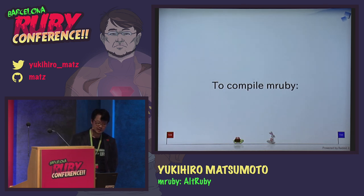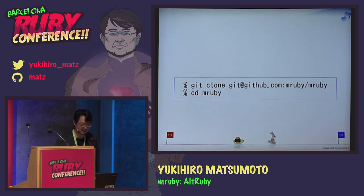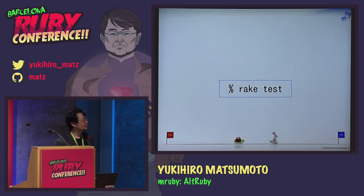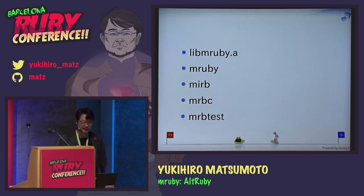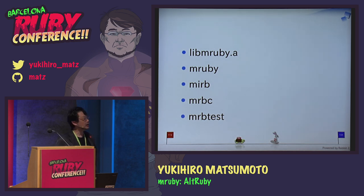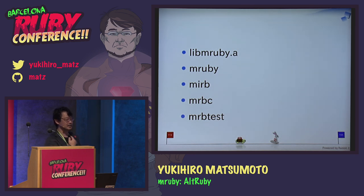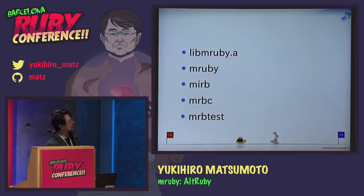You can grab the MRuby source code from GitHub. To compile it, git clone the repo, optionally edit the build config file, then run rake. By compiling via rake you get a static library, the mruby interpreter, mirb (the interactive MRuby, like IRB), mrbc (the bytecode compiler to compile Ruby into binary), and mrb_test — the test suite that compiles all tests into one single binary.